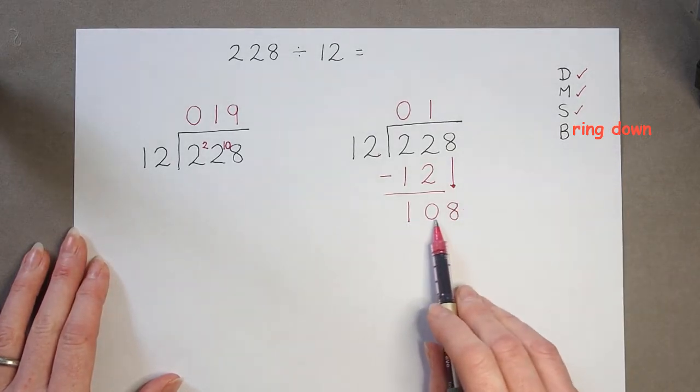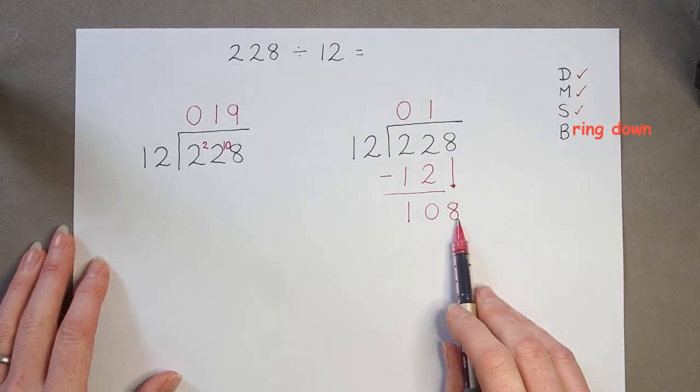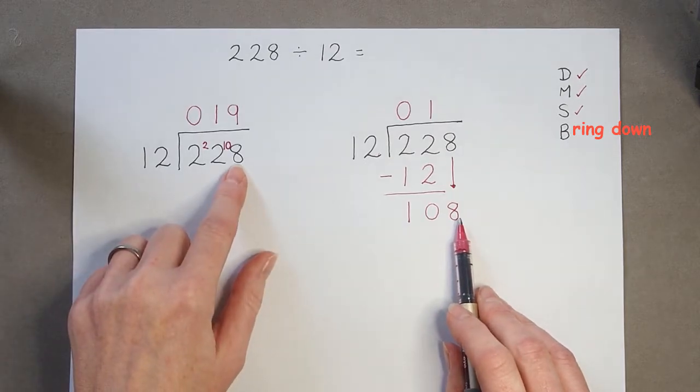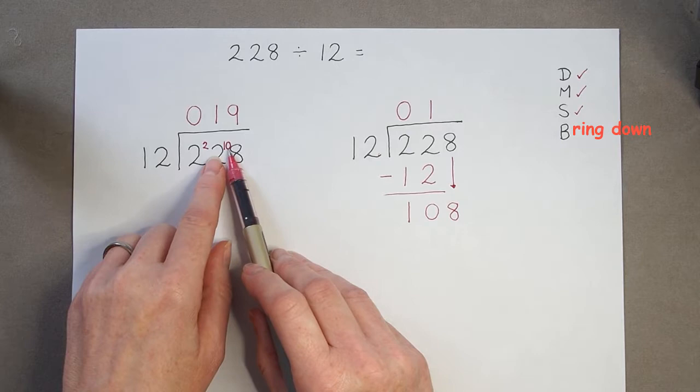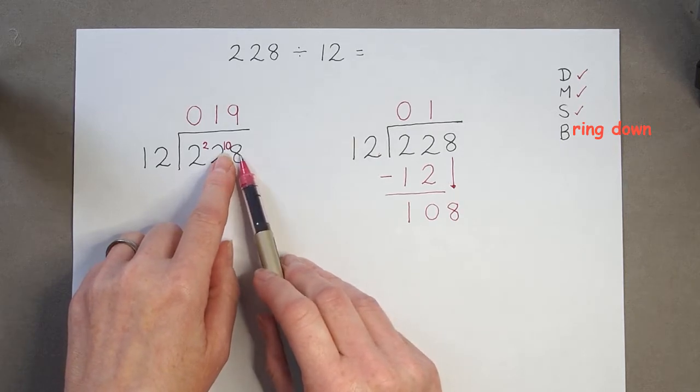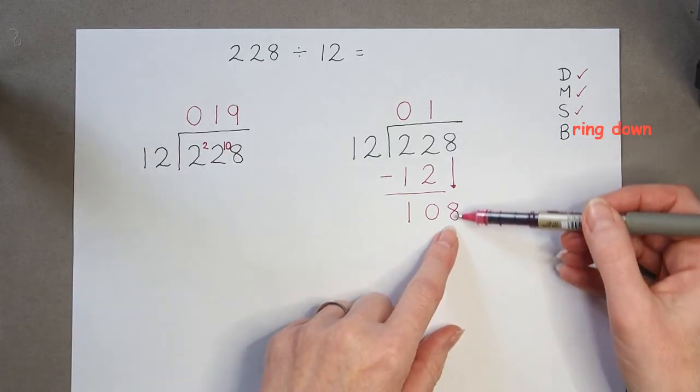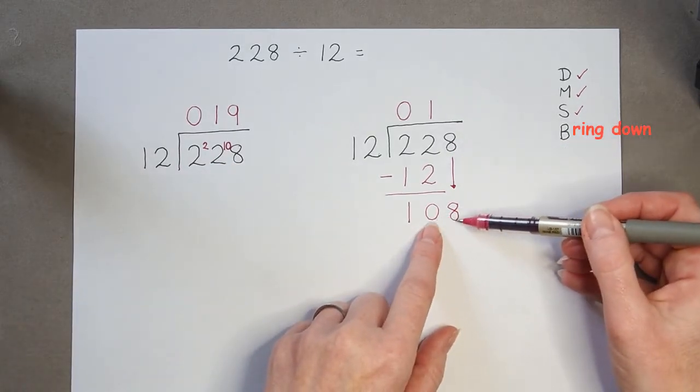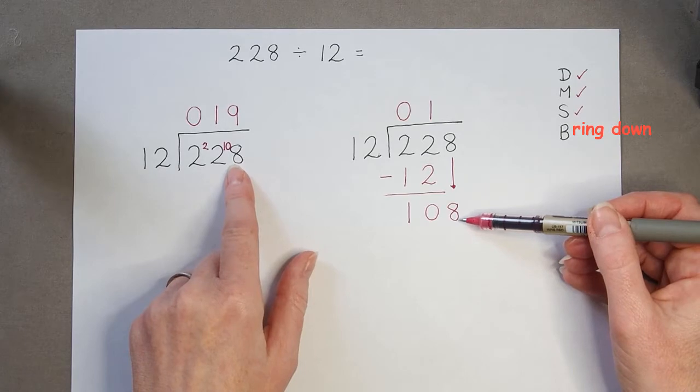So, we have 108. So, it's just this final step. Instead of writing our remainder in up here in the box, in front of the 8, instead we move that 8 and write it down after our remainder. We've still got the same number, 108.